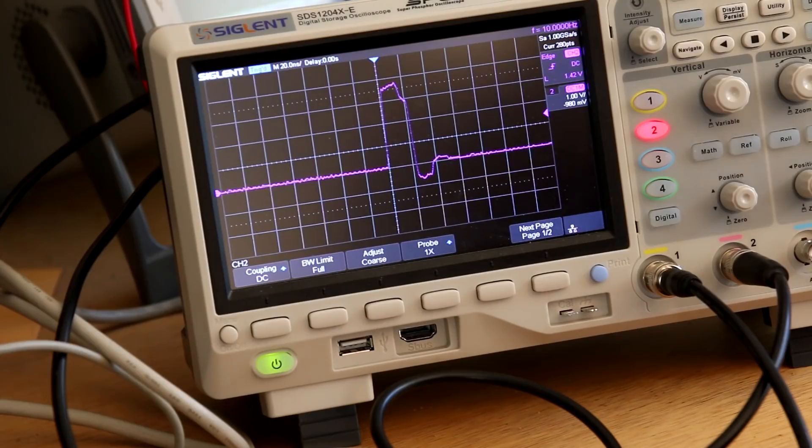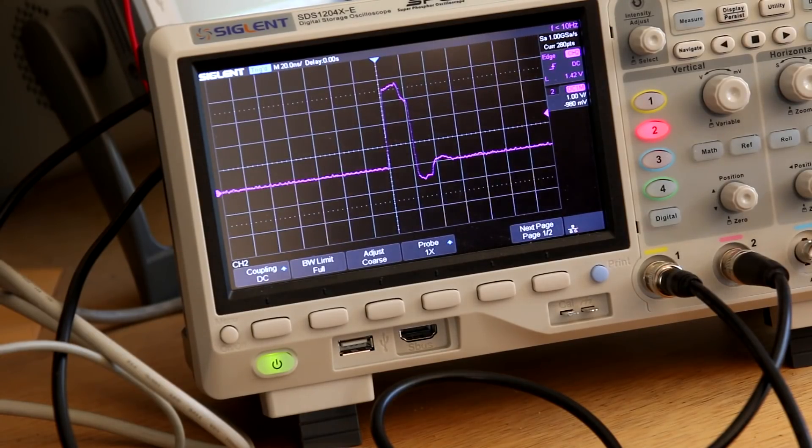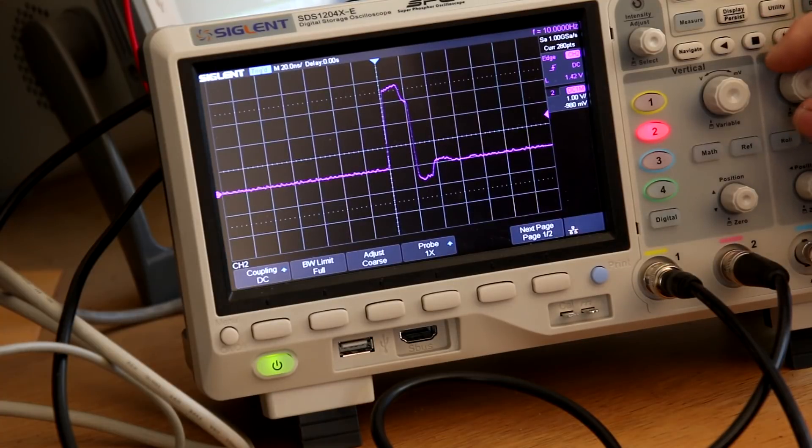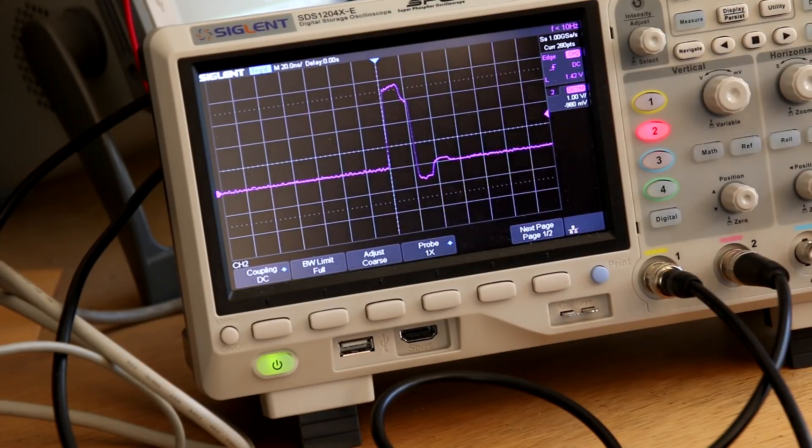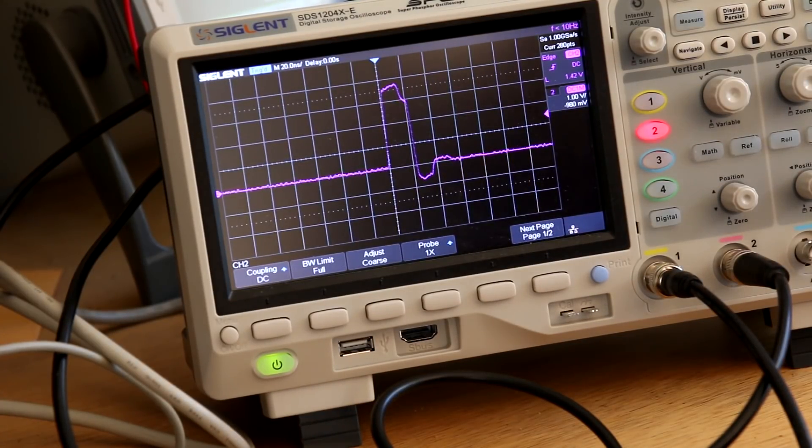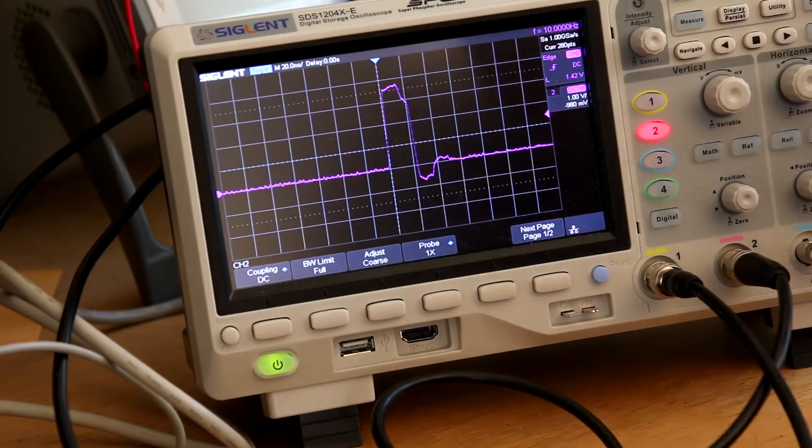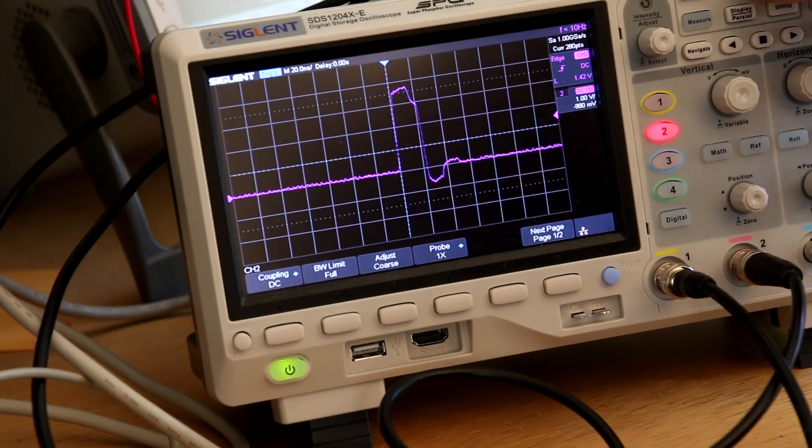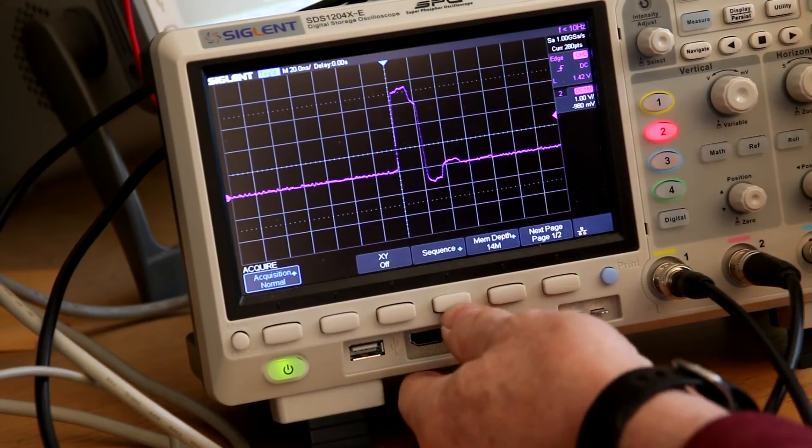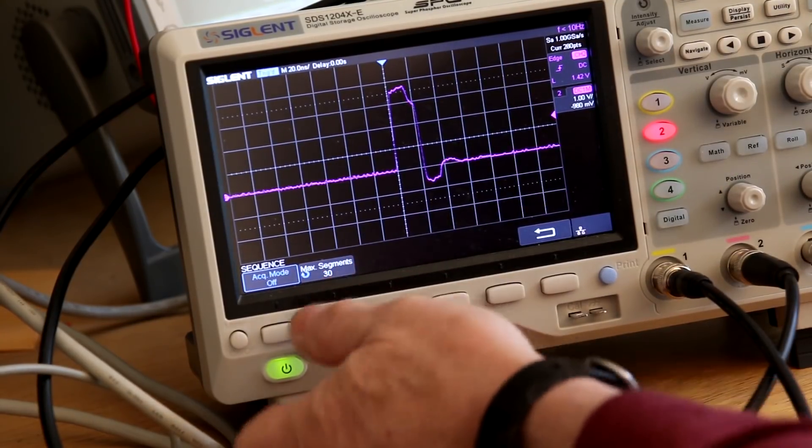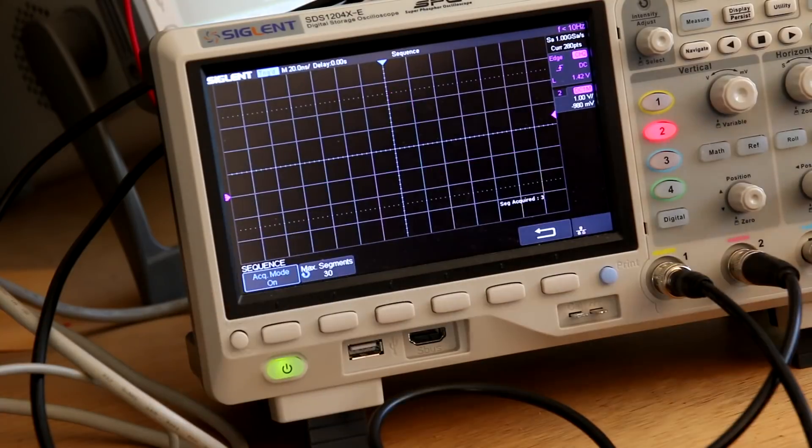So here's how you use the segmented memory. Here's a pulse. It's about a 20 nanosecond pulse, and it's coming only about 10 times per second. I've got the sweep rate cranked up pretty high here at 20 nanoseconds per division. Clearly, the memory would fill after one of these pulses came along. You wouldn't be able to see any of the other pulses. So I can go into the acquisition menu, turn on the sequencing, and I've set it to break memory up into 30 individual chunks. I turn on segmented memory.